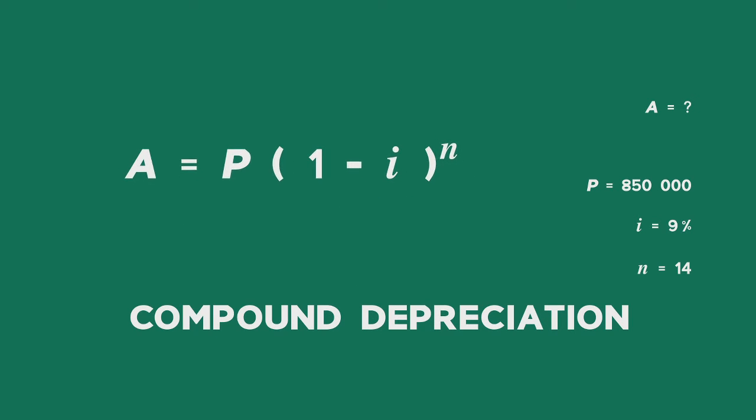The formula we're using is A equals P brackets 1 minus I close bracket to the power of N. Remember, we're using a negative to indicate that we are using compound depreciation.